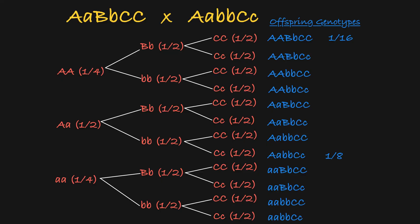So as you can see, a branched line diagram is just another way you can visualize multi-gene crosses and answer questions about offspring for that cross.